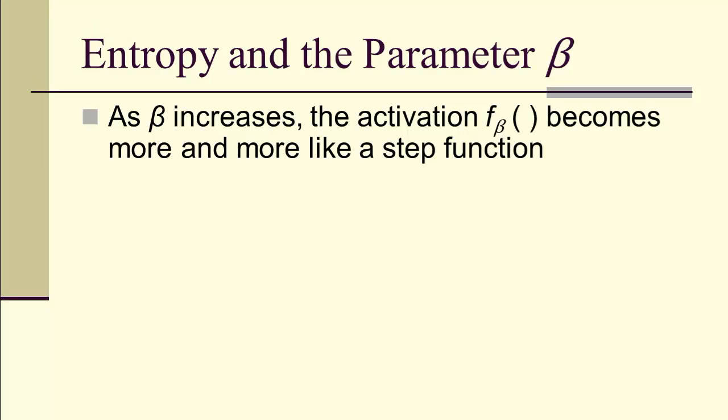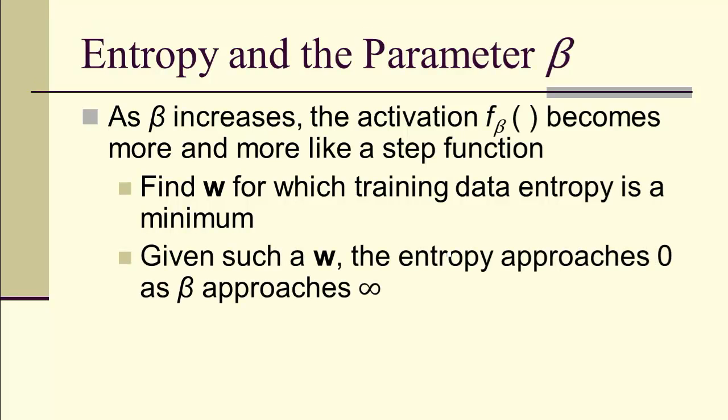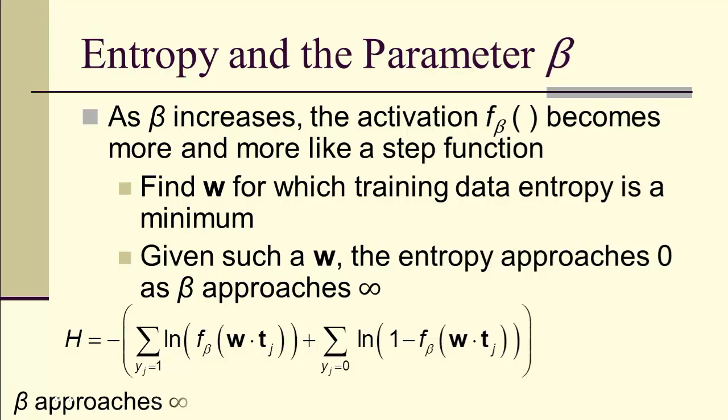As beta increases, the activation function becoming more and more step-like means that the w for which the training data entropy is a minimum is what we want to find. The w becomes the most important thing. What happens as beta approaches infinity? The w actually, the successive w's for each beta actually gives us the entropy approaching zero. You can see that by just looking at the entropy. As beta goes to infinity, the first term approaches one, the log of that zero. The second term is zero, one minus zero is one, and the natural log is once again zero.